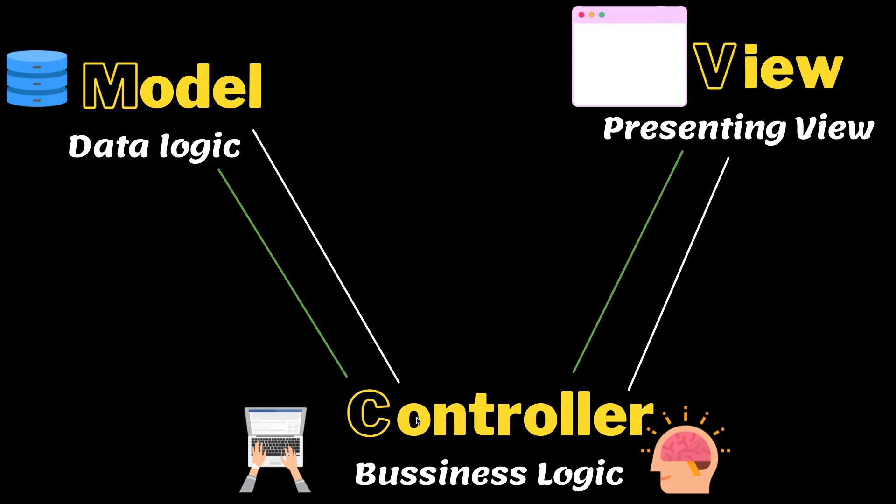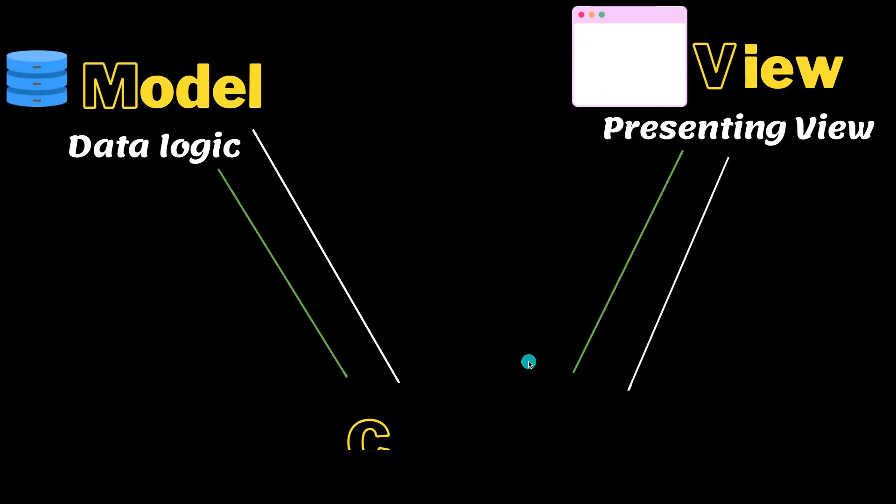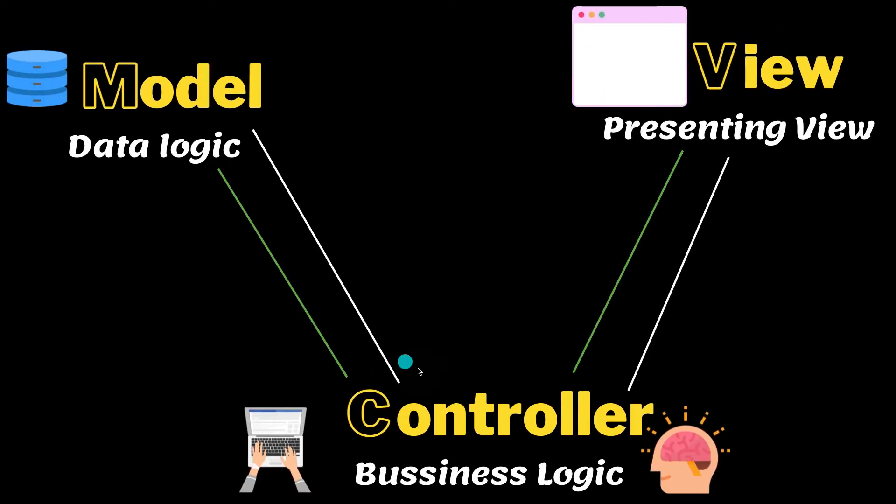The relationship here is that the controller depends on the model. So before you implement any business logic, first of all, you need to talk to your model that, hey model, I want this user that you have defined in your model to work or to read, or I want to delete or I want to update. So before you implement that, first of all, our controller will talk to the model instance.